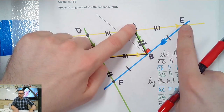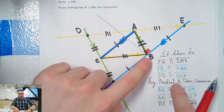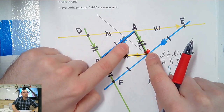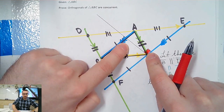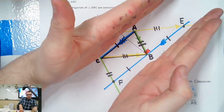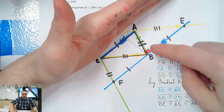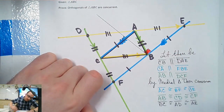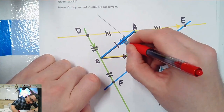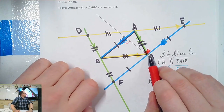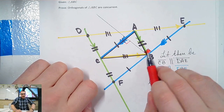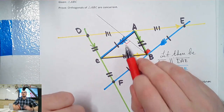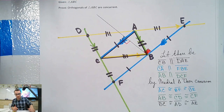Two parallels, transversal. So by alternate interior angles — inside the parallels, opposite sides of the transversal — these two are 90. I would highly encourage you to do the original in color and the one you make later not, or vice versa. So we know that.